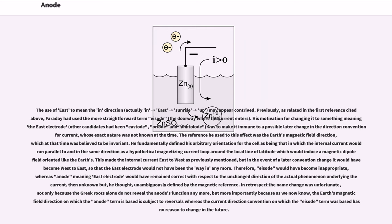The use of 'east' to mean the interaction (actually an east sunrise up) may appear contrived. Previously, as related in the first reference cited above, Faraday had used the more straightforward term 'eisode', the doorway where the current enters. His motivation for changing it to something meaning the east electrode (other candidates had been eastode, or eode, and anatolode) was to make it immune to a possible later change in the direction convention for current, whose exact nature was not known at the time. The reference he used to this effect was the Earth's magnetic field direction, which at that time was believed to be invariant.